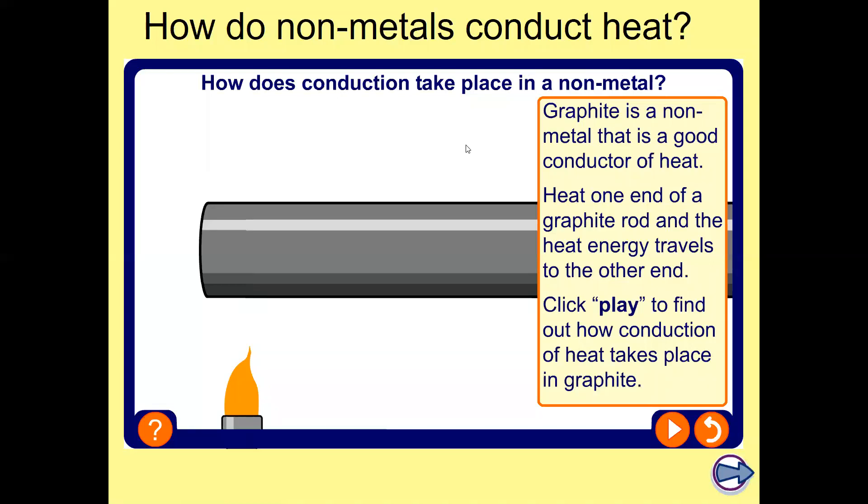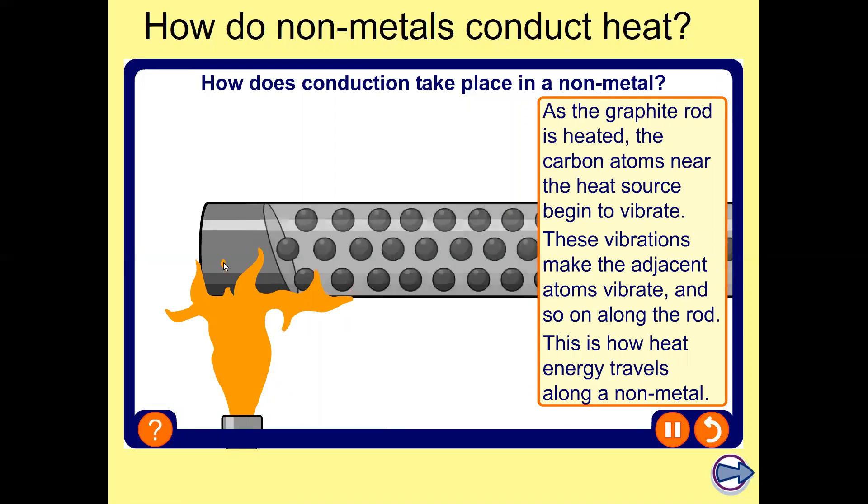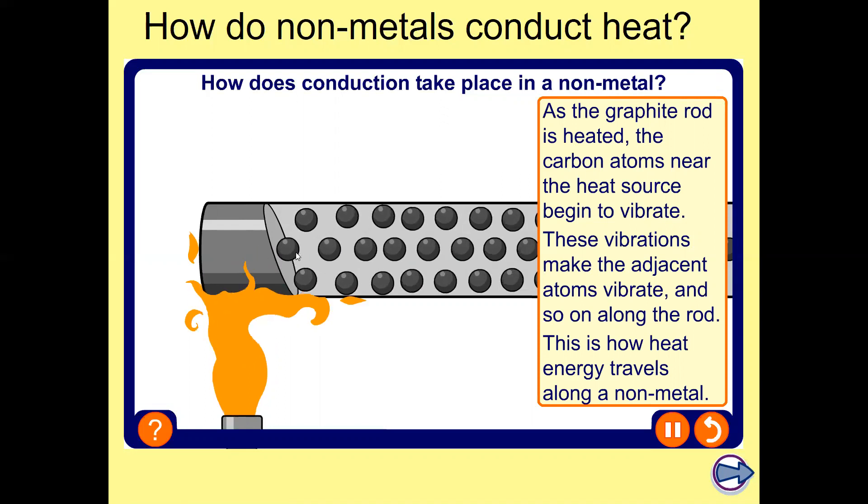For example, if you look at graphite, which is non-metal, so when we heat one end of graphite, what's going to happen? The carbon atoms near the heat source, they're going to gain thermal energy and kinetic energy and they're going to start vibrating.